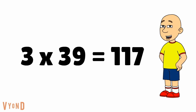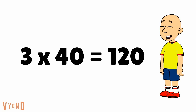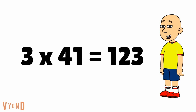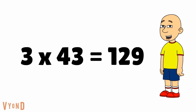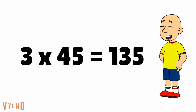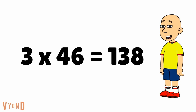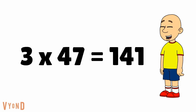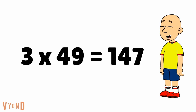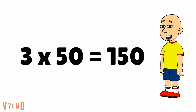3 times 39 equals 117. 3 times 40 equals 120. 3 times 41 equals 123. 3 times 42 equals 126. 3 times 43 equals 129. 3 times 44 equals 132. 3 times 45 equals 135. 3 times 46 equals 138. 3 times 47 equals 141. 3 times 48 equals 144. 3 times 49 equals 147. And 3 times 50 equals 150.